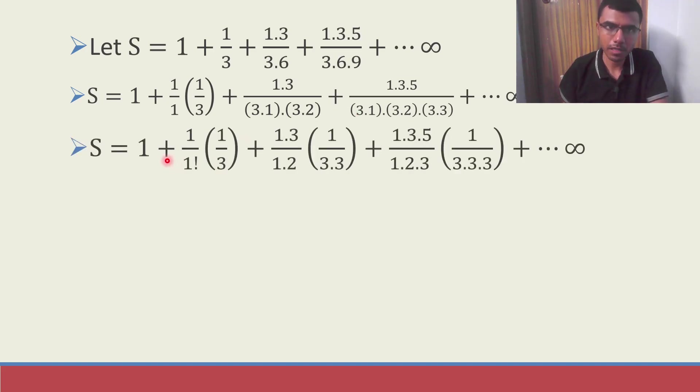Next, so as I mentioned, this 1, I wrote it as 1 factorial. Next, this 1 into 3 by 1 into 2. I brought this much outside and in a bracket, I get 1 by 3 into 3. Now next, here also 1 into 3 into 5 by 1, 2, 3. And then 3 3s would be left in a bracket.